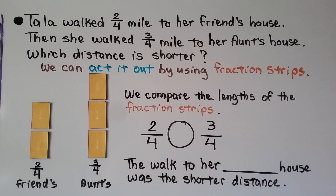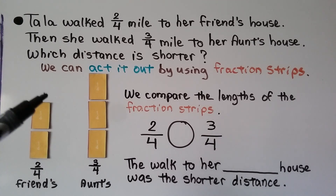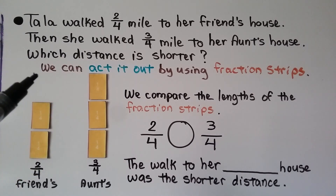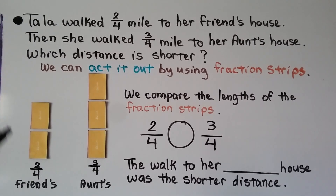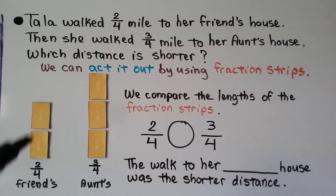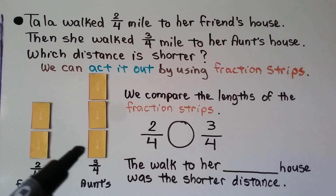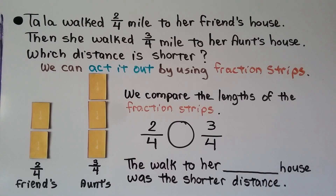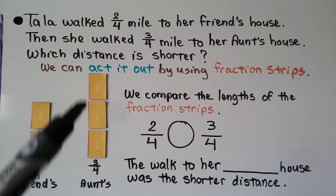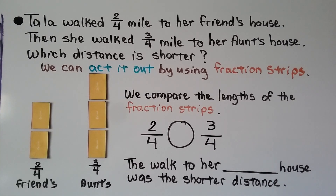Tala walked two-fourths mile to her friend's house. Then she walked three-fourths mile to her aunt's house. Which distance is shorter? We can act it out by using fraction strips, so we need to use two-fourths and three-fourths. We have two one-fourth fraction strips — that's two-fourths, the distance she walked to her friend's house. And we have three one-fourth fraction pieces — that's three-fourths mile, the distance to her aunt's house. We can see three-fourths is much bigger — it's another fourth. So two-fourths is less than three-fourths.